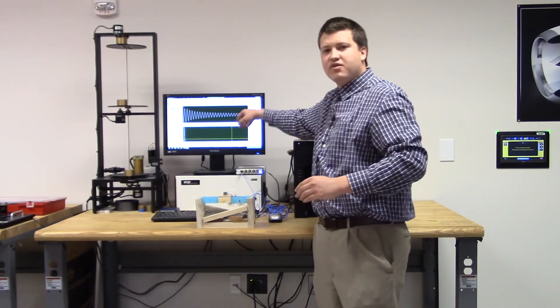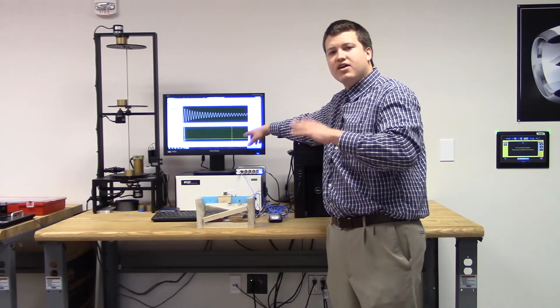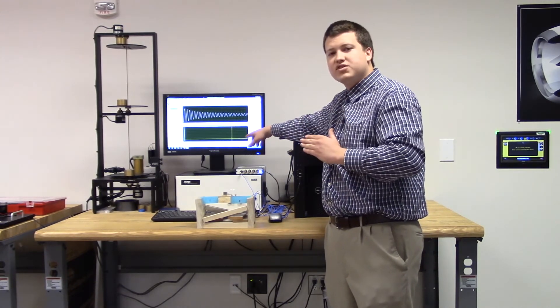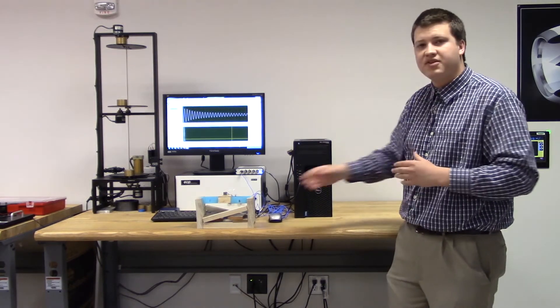The top graph you can see we record acceleration versus time data, and the bottom graph we record amplitude versus frequency data. This frequency graph can be used to determine the natural frequency of the system.